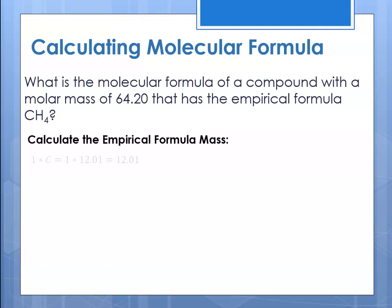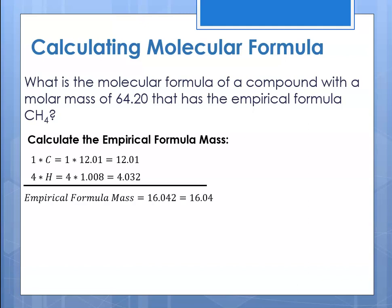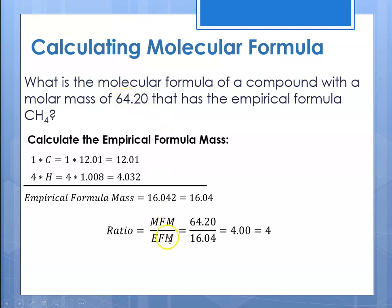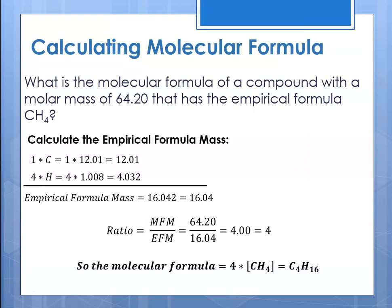Example: What is the molecular formula of a compound with a molar mass of 64.20 that has the empirical formula CH₄? First, calculate the empirical formula mass: 1 × C = 12.01, 4 × H = 4.032, total = 16.042, rounds to 16.04. Then the ratio = 64.20 ÷ 16.04 = 4.00, so the ratio is 4. The molecular formula is 4 times the empirical formula CH₄, giving the true formula C₄H₁₆.